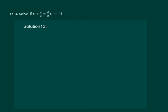Let us read the question. Solve 5x plus 7 by 2 equal to 3 by 2x minus 14. So first step is to transport the constant term. We get 5x equal to 3 by 2x minus 14 minus 7 by 2.